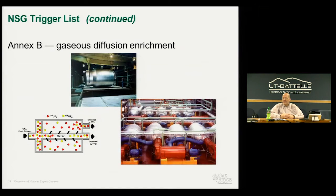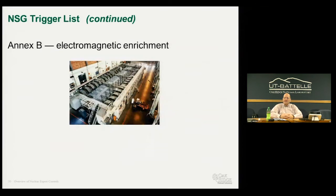Gas diffusion was used at Oak Ridge and later Paducah and Portsmouth, Ohio for most U.S. enrichment activity. It is a very large-scale operation requiring about 2,000 consecutive stages of enrichment to reach weapon-grade uranium. It has been used by the United States, France, and Russia, but has largely fallen out of favor due to its very intensive use of electrical power compared to gas centrifuge. Electromagnetic separation was used at the Y-12 plant at Oak Ridge to enrich uranium for the Little Boy bomb, and was also the process Iraq pursued in the late 1980s and early 1990s.